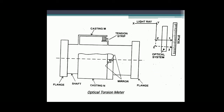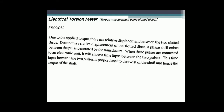Next is the Electrical Torsion Meter. The principle is: due to applied torque, there is a relative displacement between two slotted discs. Due to this relative displacement, a phase shift exists between the pulses generated by the transducers. When the pulses are connected to an electric unit, it will show a time lapse between the two pulses. This time lapse between the two pulses is proportional to the twist of the shaft and hence the torque of the shaft.